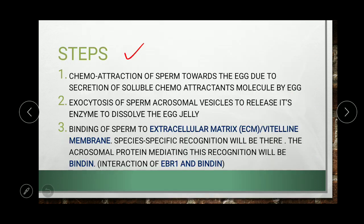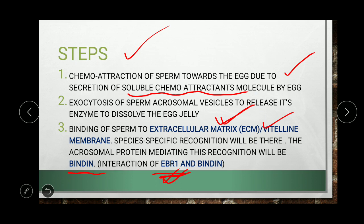The sequential written steps are: first, chemo-attraction of sperm toward the egg due to secretion of soluble chemo-attractant, which is the resact protein molecule. Second, exocytosis of sperm acrosomal vesicles to release hydrolytic enzymes that dissolve the egg jelly. Third, binding of sperm to the extracellular matrix and vitelline membrane, where species-specific recognition occurs via the EBR1 molecule. The acrosomal binding protein mediates this recognition by interacting with EBR1 on the vitelline membrane.